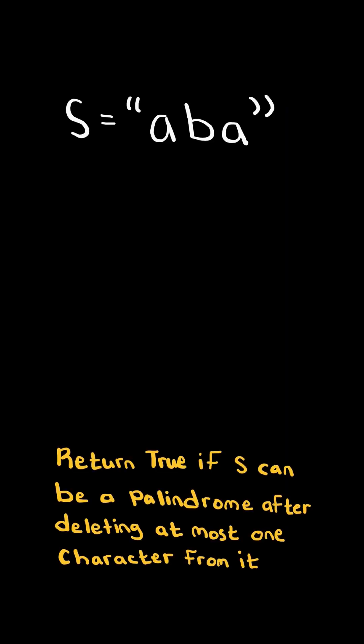Valid palindrome 2. Given a string s, return true if s can be a palindrome after deleting at most one character from it. Note, a palindrome is a string read the same forward and backwards.